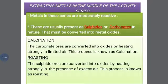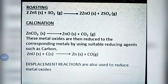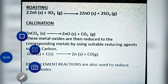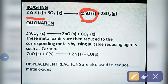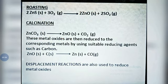For example, in roasting: zinc sulfide is heated to give zinc oxide, and zinc oxide when heated further gives pure metal. In calcination: zinc carbonate is heated to give zinc oxide, and zinc oxide is again heated to give pure metal. We also use reducing agents such as carbon — carbon reduces the metal oxide to pure metal.